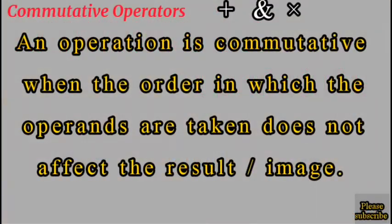An operation is commutative when the order in which the operands are taken does not affect the result or the image. That is to say, if you are given any two elements A and B, then A plus B or A times B will always be the same.